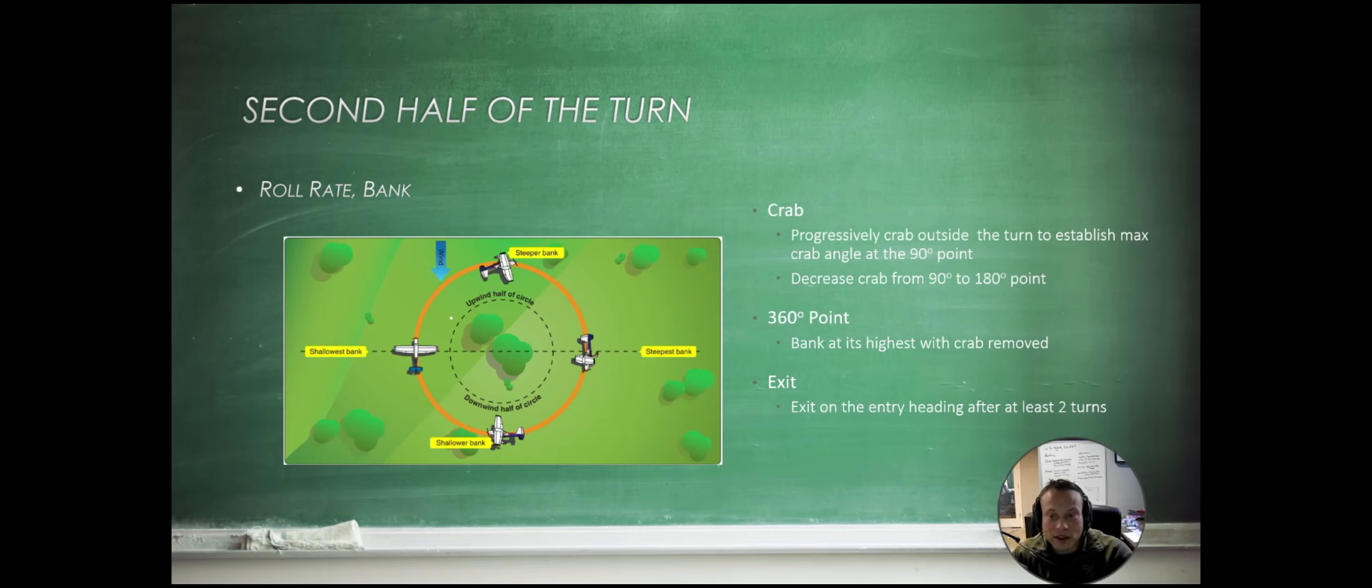Now, on the second half of the turn, we're going to crab outside the turn to a maximum crab angle at the 90 degree point here. And then at the 360 degree point, once we've completed the turn, the bank is at its highest with the crab removed. And then exit after two turns. So we're going to do this twice and demonstrate that we can account for this wind twice.